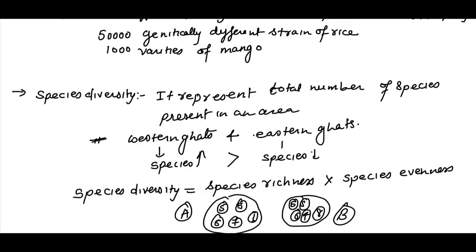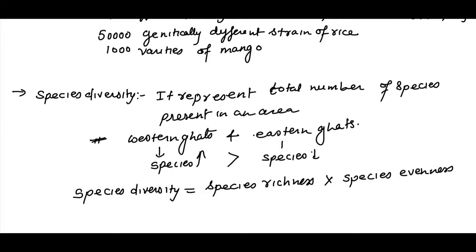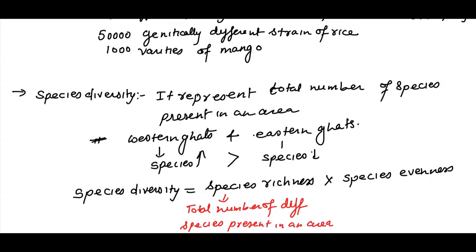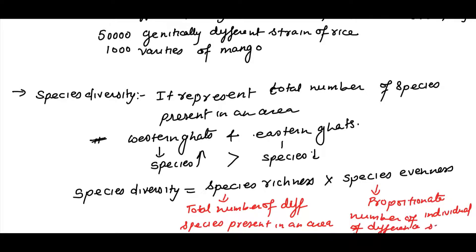Species diversity is richness plus evenness — it is not about a single thing. Richness means how many different types of species are present in an area, which is the total number of species. Evenness is the proportionate number of individuals of different species — how evenly they are distributed. Together these define species diversity.